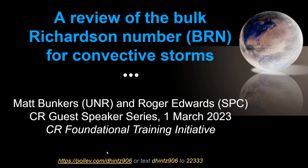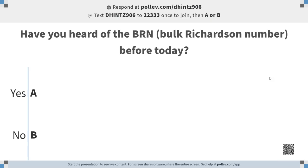Last year, Central Region had a foundational training team that looked at various training items, and one of the things noted was that there are some topics good to review. So I've decided to address the bulk Richardson number — that may be a review for many of you, and for some it may be new if you're relatively new to the agency. This was developed in the early 80s for convective storms. We'll start with the first poll question.